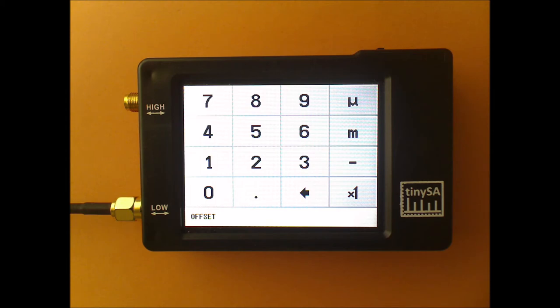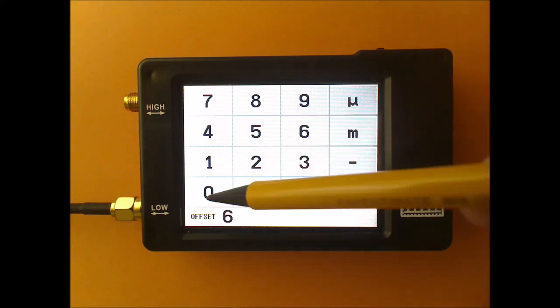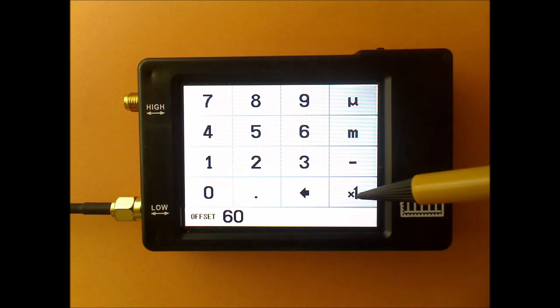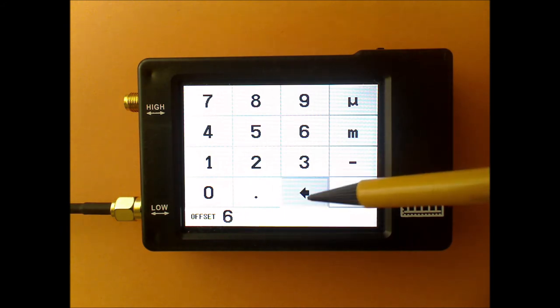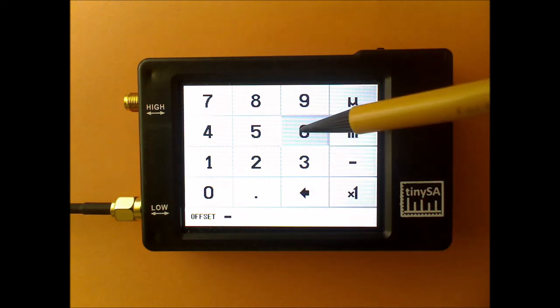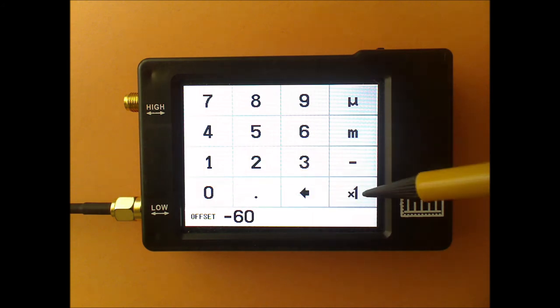For instance, if my previous signal would not be coming from a signal generator but from a transmitter, and I'm using a 60 dB attenuator to get the signal from the transmitter into the TinySA, I can enter here minus 60 as the attenuation.